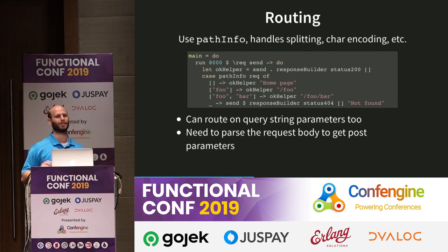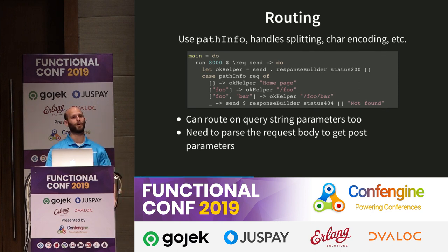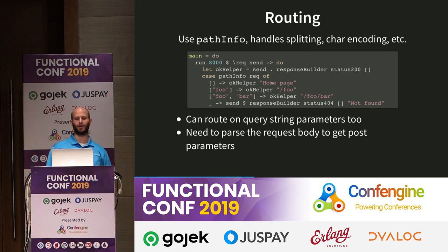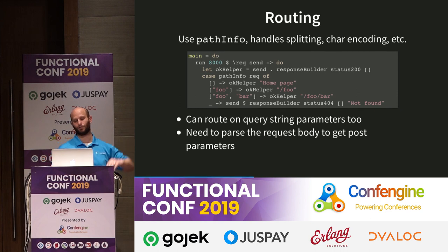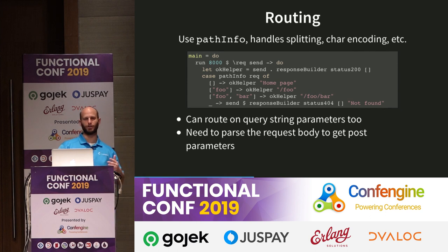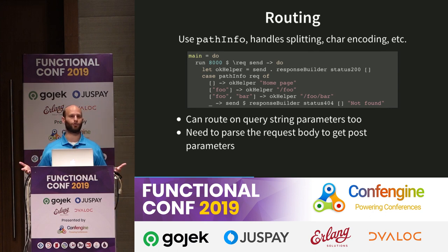That's the end of the hard part. Now we're going to get into just actually using this thing to write stuff. You can do routing in WAI really easily. Remember that path info I showed you before? It's a list of texts. I've defined a helper function called okHelper which is going to just send a responseBuilder. Then I'm just using normal pattern matching: for slash, it returns 'homepage'; for slash foo it gives 'slash foo'; for foo-bar it works that way. And then we generate a 404 Not Found response for anything else. You can also do pattern matching on the query string just as easily as on the path info.